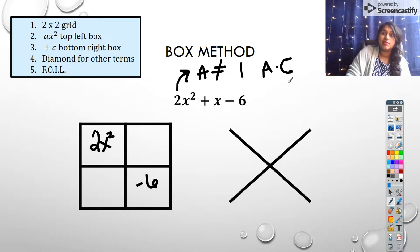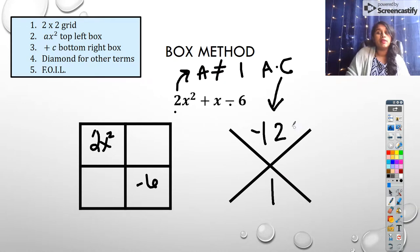So what do I do? I'm going to do A times C, and that value is what I'm going to put here. So 2 times negative 6 is negative 12. And I'm still going to put my B value here.